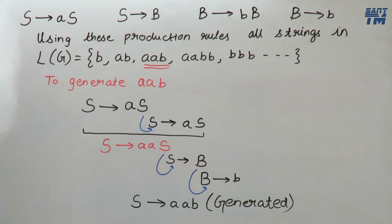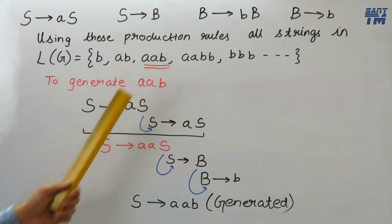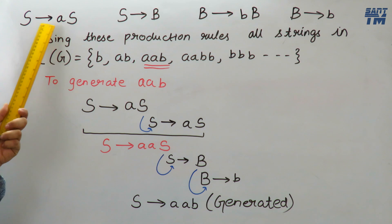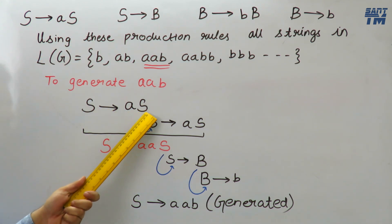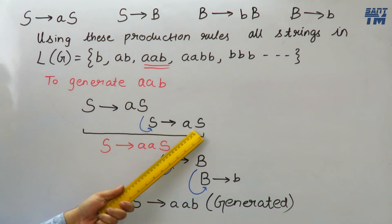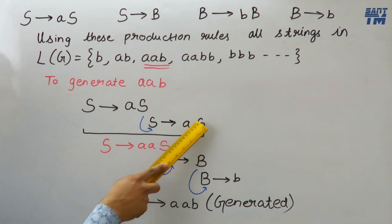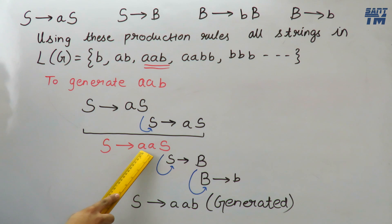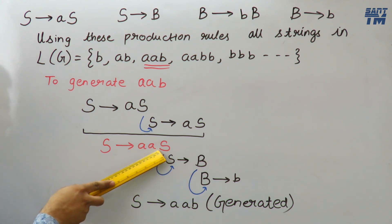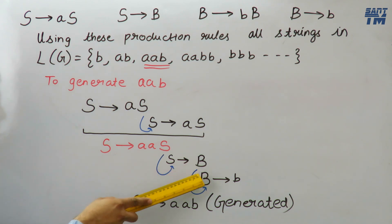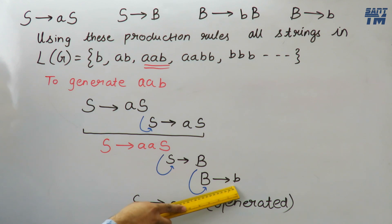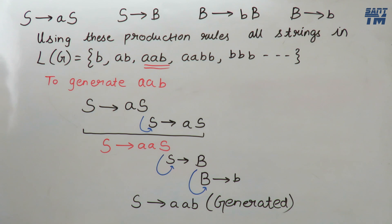Now to generate the third string aab, we use the production S derives aS. Then this S can be replaced further using the same production S derives aS, giving us S derives aaS. Then this S can be replaced using S derives B, and this non-terminal B can be further replaced with small b. So we finally get S derives aab — the third string is also generated.